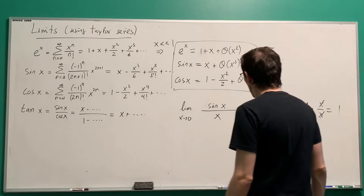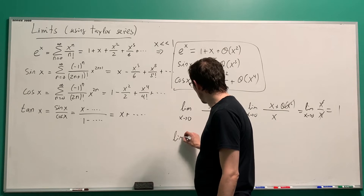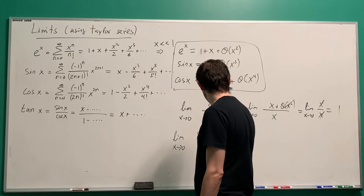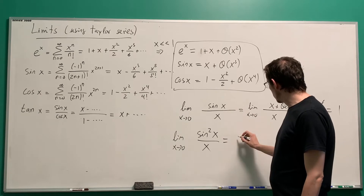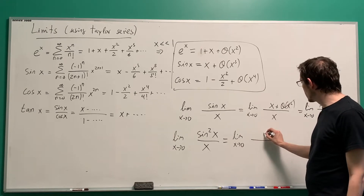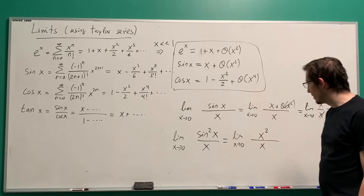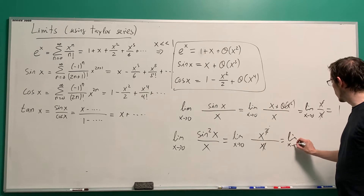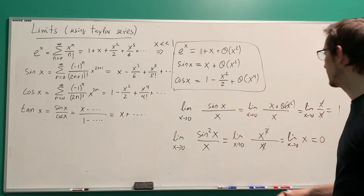Let's do another: the limit as x goes to 0 of sin²(x) divided by x. Again we can do Taylor expansions. The sine goes like x in that limit, so sin²(x) goes like x squared. We get the limit of x squared over x, which is the limit of x going to 0, and that's 0. Both examples are super simple — Taylor expansions or L'Hôpital, either way.